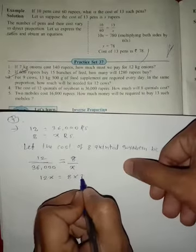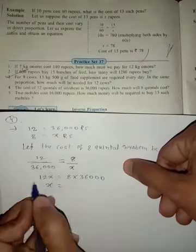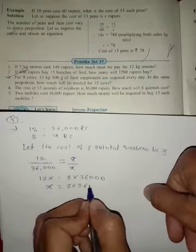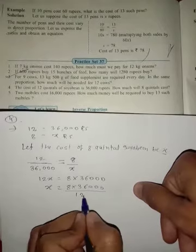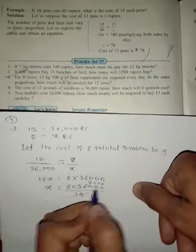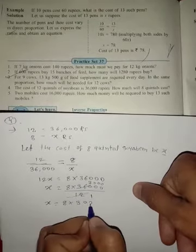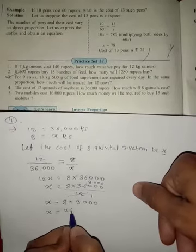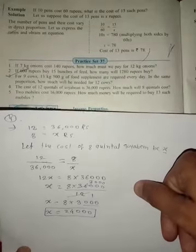Now if we take only x, this 12 comes to division, so x equals 8 times 36,000 divided by 12. 12 goes into 36 three times, so x equals 8 times 3,000. Therefore x equals 24,000.